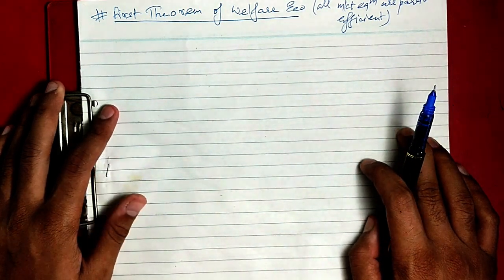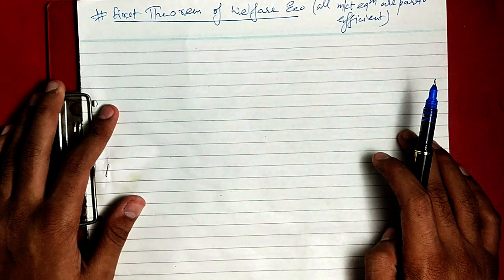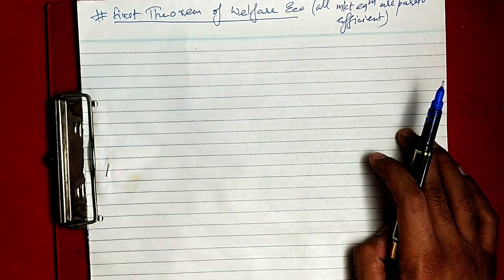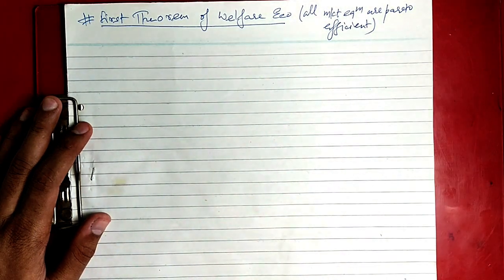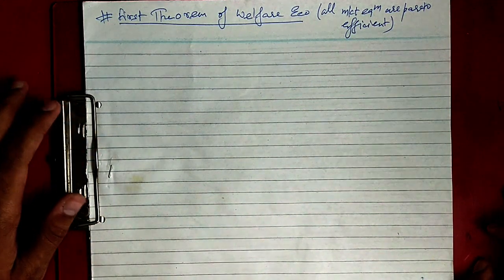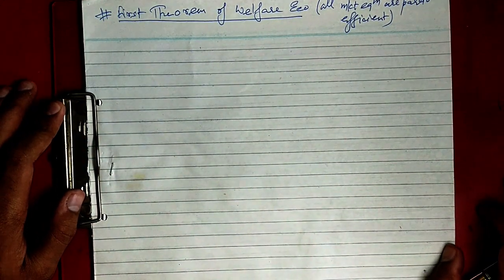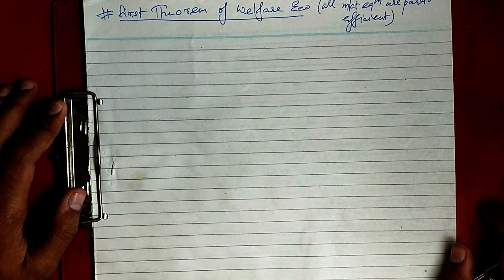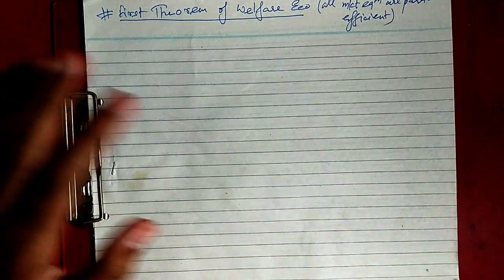This theorem says that all market equilibria are Pareto efficient. This is the only statement the theorem gives. It also means that market equilibrium will exhaust all gains from trade. Now we have to prove this statement.